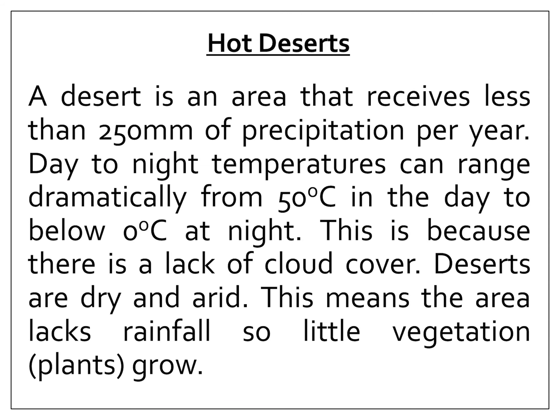Let's start with a definition. A desert is an area that receives less than 250mm of precipitation per year. Day-to-night temperatures can range dramatically, from 50 degrees in the daytime to below 0 degrees at night.